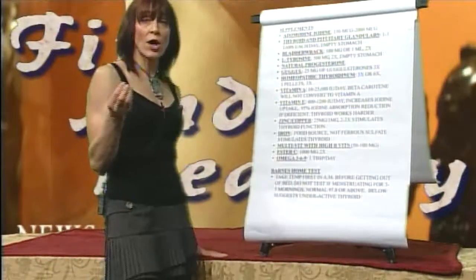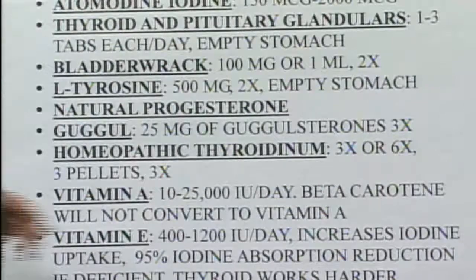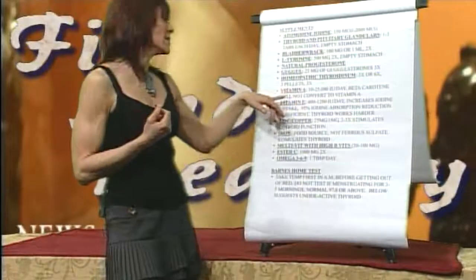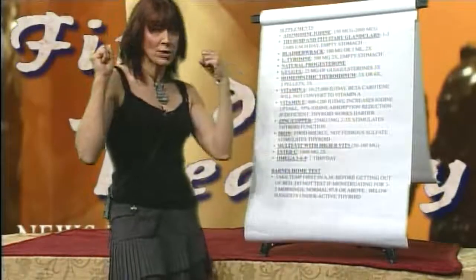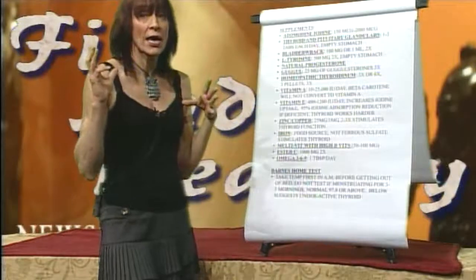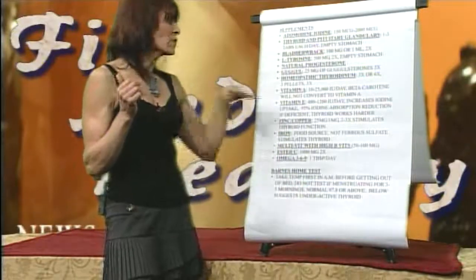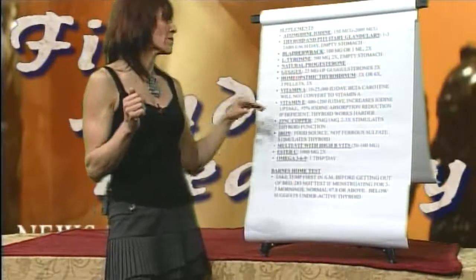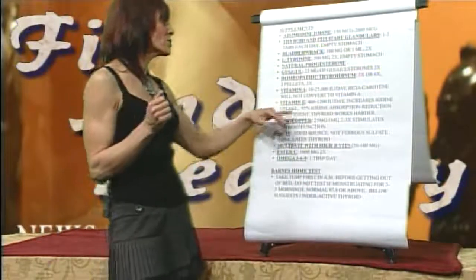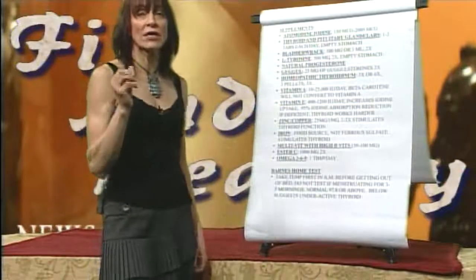Atomidine iodine or kelp sources of iodine can be used to help feed the thyroid. But you need other nutrients as well, including a good multiple vitamin and vitamin A — beta-carotene sources aren't going to cut it. Vitamin A is important; you have to take very high dosages over a long period of time before it's a problem. If you're getting a lot of infections, that's a good indicator you're not getting adequate vitamin A. Vitamin E — 400 to 1,200 IU — because 95% absorption is reduced when you're deficient in vitamin E.